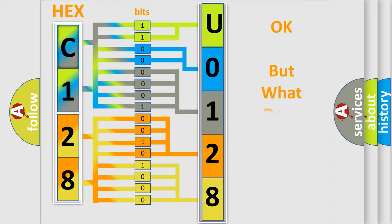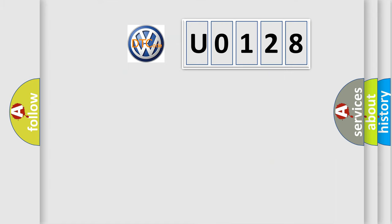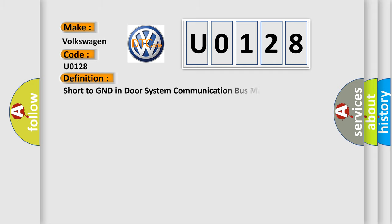We now know how the diagnostic tool translates received information into a more comprehensible format. The number itself does not make sense if we cannot assign information about what it actually expresses. So, what does the Diagnostic Trouble Code U0128 interpret specifically for Volkswagen car manufacturers? The basic definition is: Short to GND in door system communication bus malfunction.